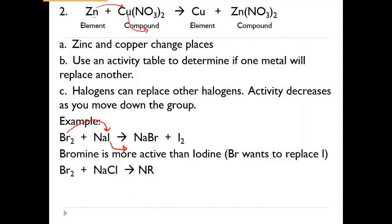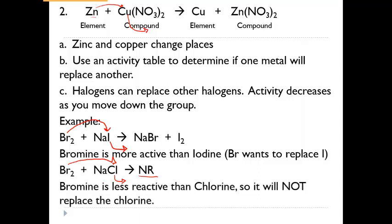If we did the same thing but changed halogens — we have bromine and chlorine — we need to find bromine and chlorine on the activity chart. Chlorine is more active; it is higher up on the chart. So we put NR for no reaction. Chlorine is more reactive, so chlorine wants to stay with sodium, and bromine is not going to replace the chlorine in that compound. That activity chart is very important — you'll be given one on the test. You're not expected to memorize it, but you definitely need to know how to use it, as it will tell you whether the reaction will happen or you'll get a no reaction.